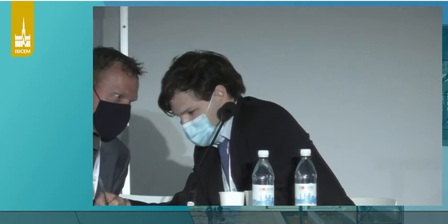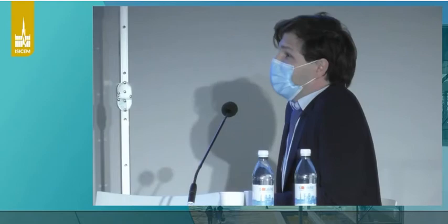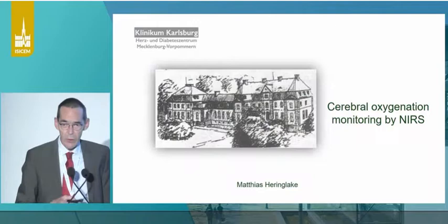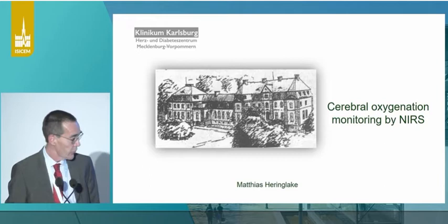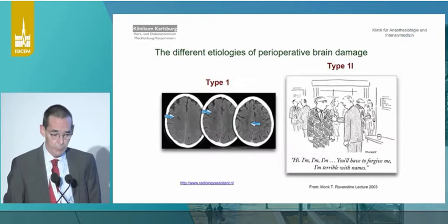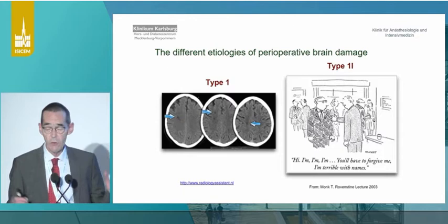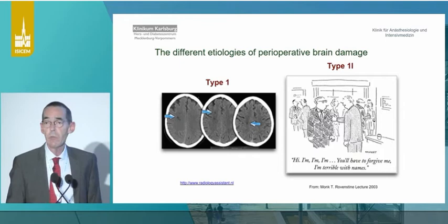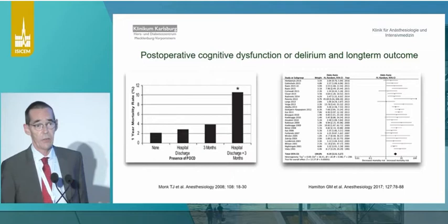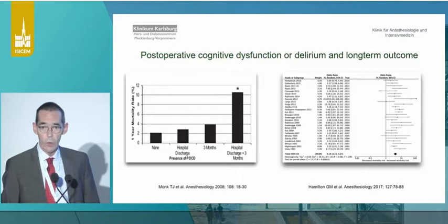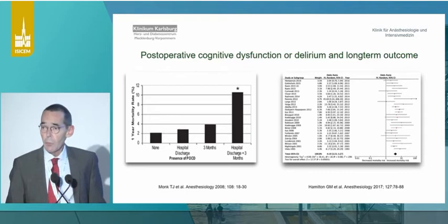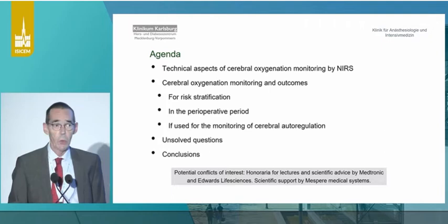Dear Chairman, dear colleagues, thank you very much for the kind introduction. I'd like to draw your attention from the neurocritical field to the cardiovascular OR, because this is clearly the place where oxygenation monitoring by near-infrared spectroscopy plays the most important role nowadays. We are facing patients who suffer from neurological damage — either as a stroke or, more frequently, from subtle derangements like postoperative cognitive dysfunction or even more frequently delirium. We know these entities are associated with a poor prognosis. The interesting question is: can we use cerebral oxygenation monitoring to reduce the burden of these neurological complications?